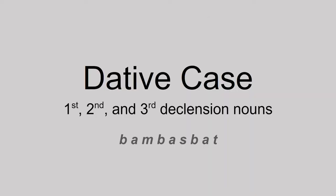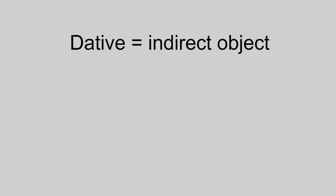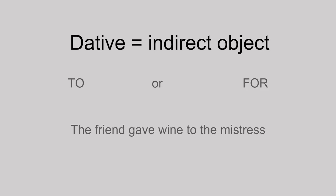The dative is a really useful case for lots of reasons, and it's used in several different ways. It's what's called the indirect object of a sentence. A noun in the dative case is almost always translated using the words 'to' or 'for.' Here's an example sentence: the friend gave wine to the mistress. The friend is the nominative; the wine is the accusative, or the direct object of the verb; the mistress is the indirect object — the wine is being given to her, so she is in the dative case.